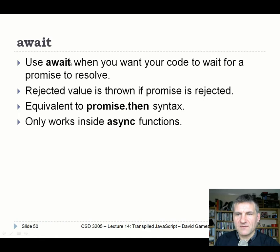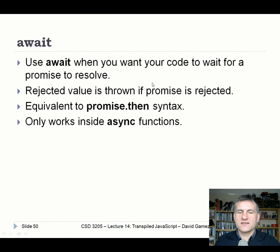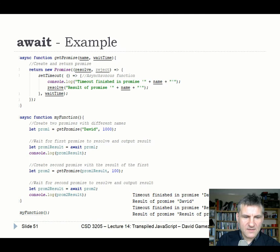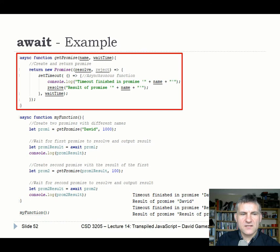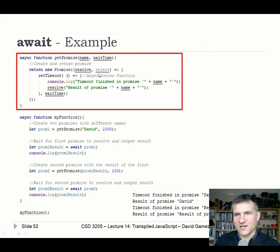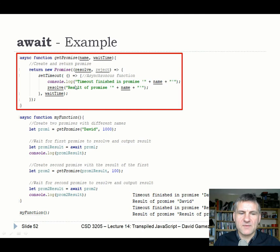A way around multiple nesting is to use await — a much, much nicer way of writing promise code. We use await when waiting for a promise to resolve; if it's rejected, it throws an exception, which is a nice way of handling errors. It's equivalent to promise.then(), but a better way of writing the same thing. Await only works inside async functions. We get a promise, give it a name and wait time, and await the promise — the resolved data is assigned directly to a variable.